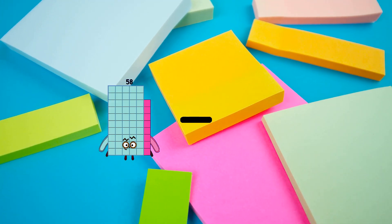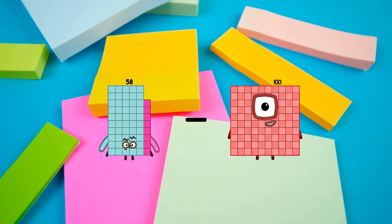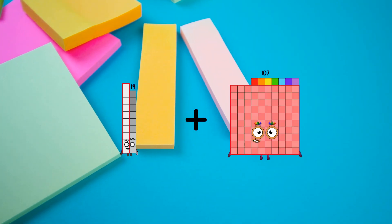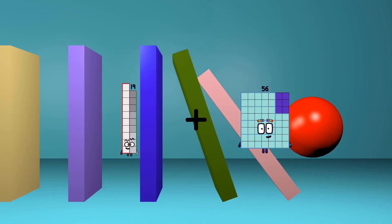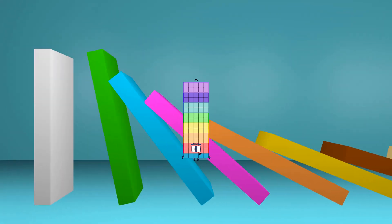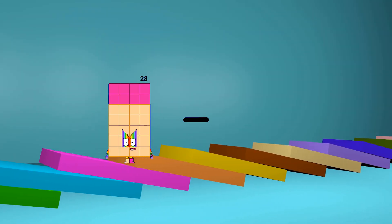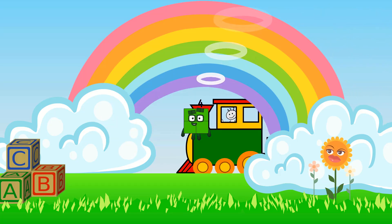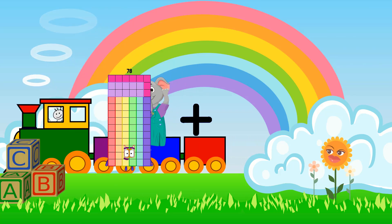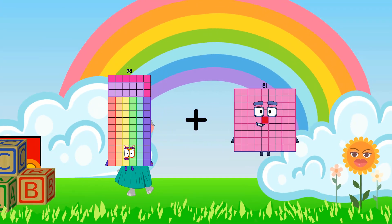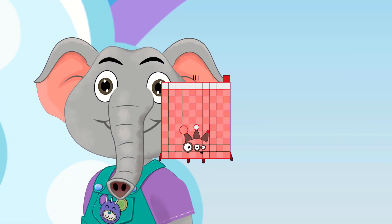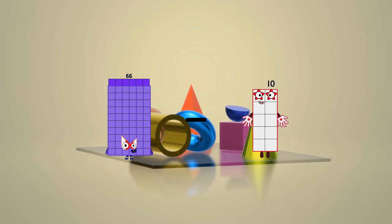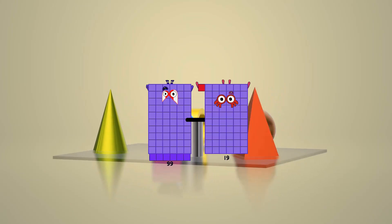58 minus 48 equals 10. 19 plus 56 equals 75. 28 minus 24 equals 4. 78 plus 33 equals 111. 66 minus 61 equals 5.